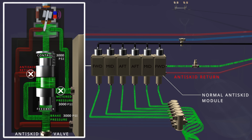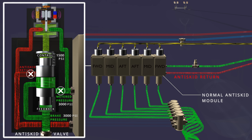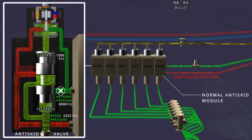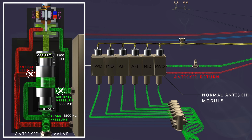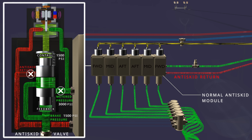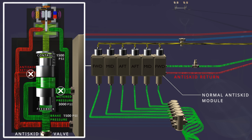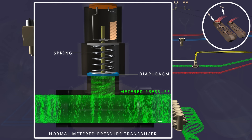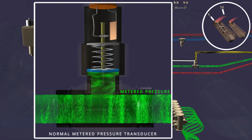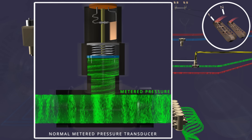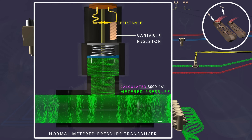The brake computer controls the anti-skid valves to prevent skidding. It maintains the desired brake pressure by releasing unwanted pressure through the anti-skid return line. To control the anti-skid valves, the brake computer must know the metered pressure being applied. This information is provided by the metered pressure transducer. The applied metered pressure moves the diaphragm inside the transducer, and the brake computer measures the resistance to calculate the current metered pressure.